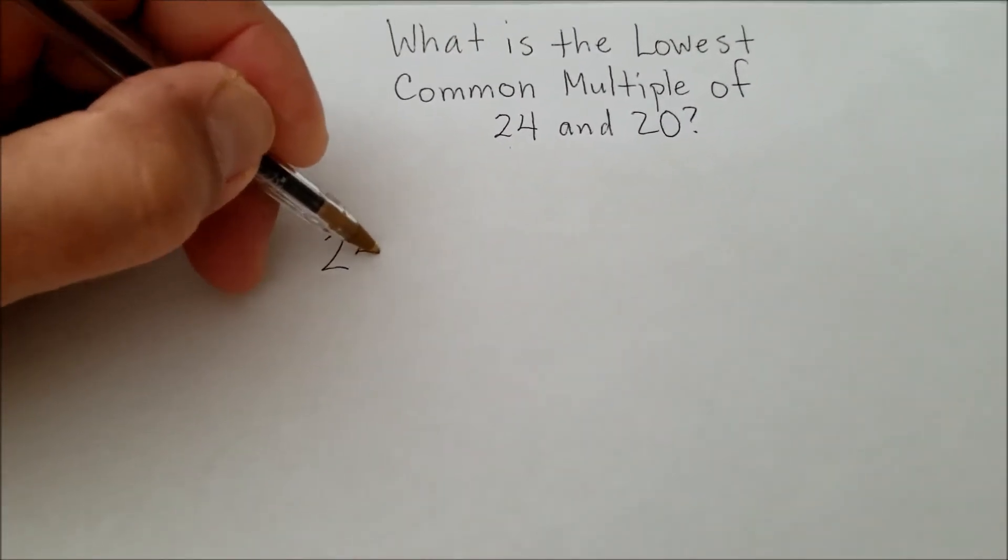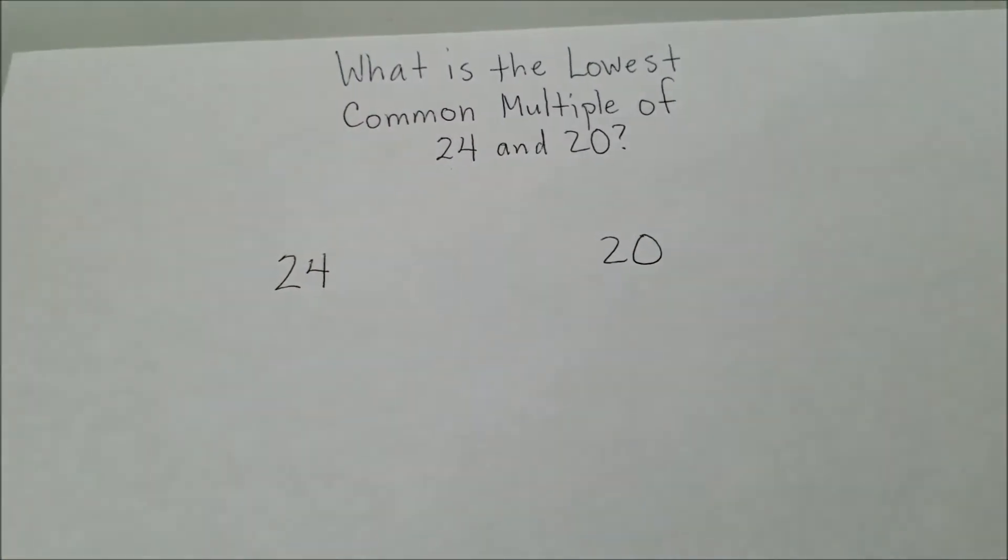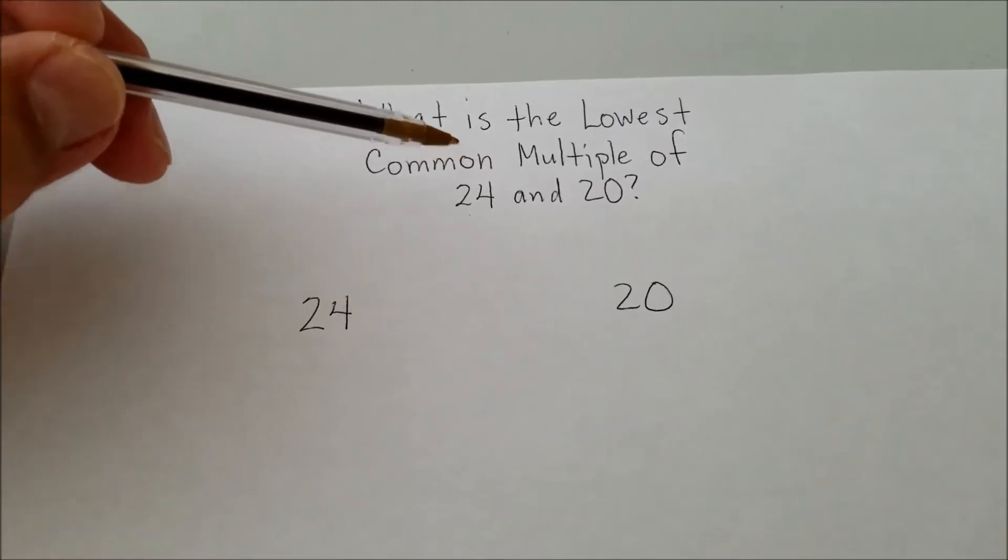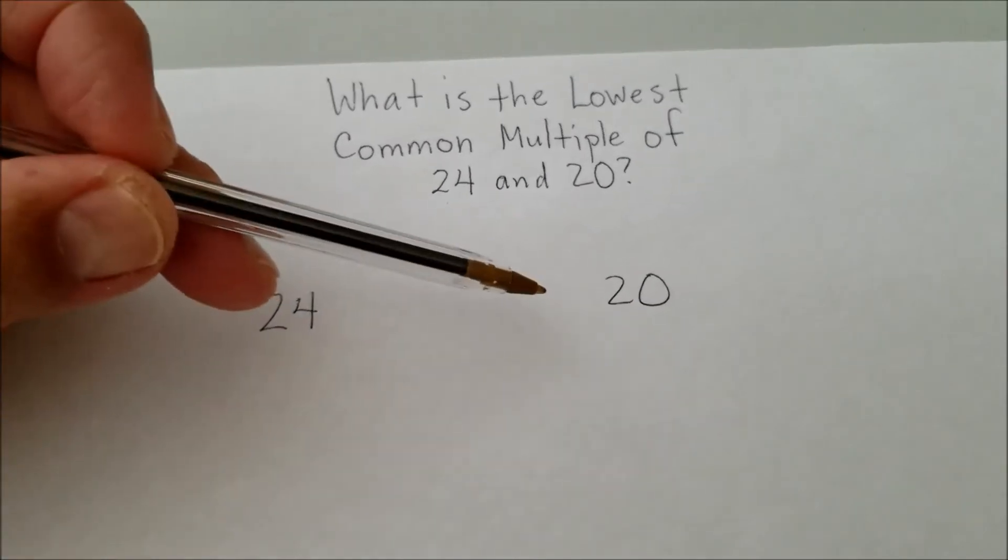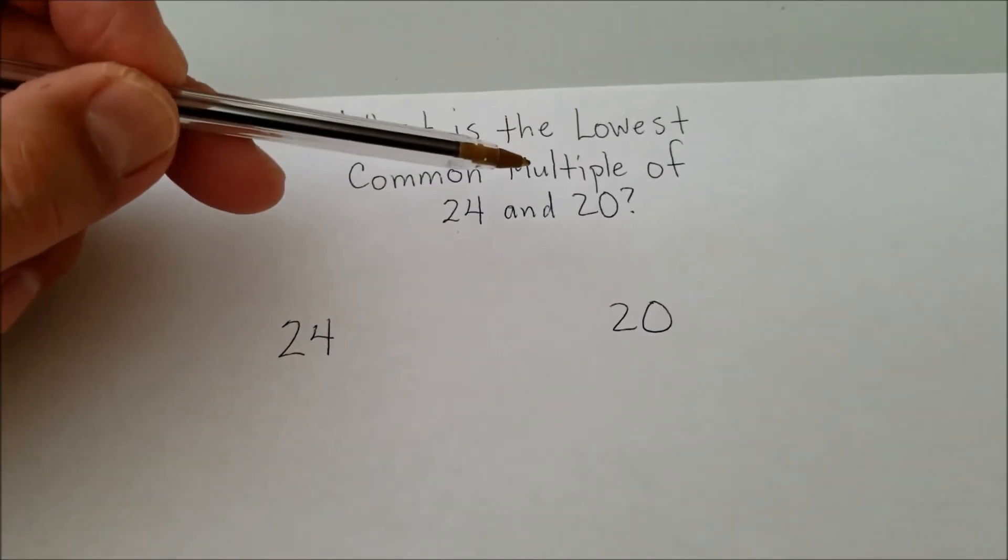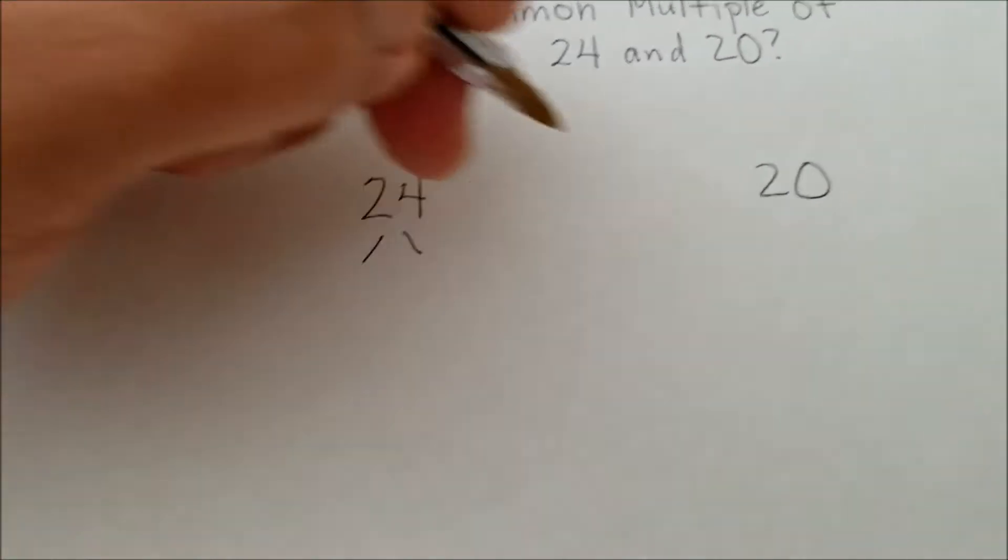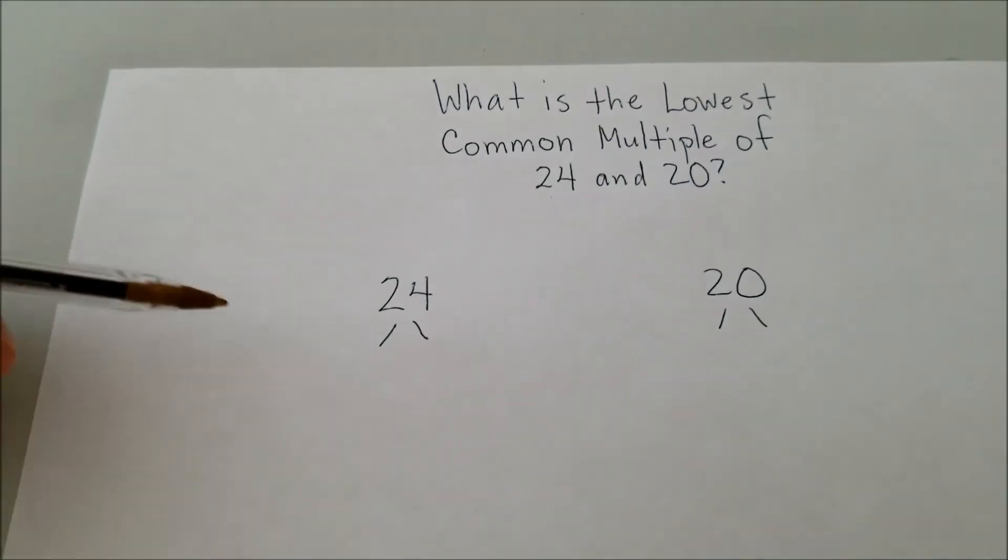So here is how I would find out this lowest common multiple. And if you need to, at the end of this video, or you can check the description, I'll leave you a link to how to prime factor a number. But we're basically going to find out this number by prime factoring 24 and 20 to get this lowest common multiple. So let's go for it.